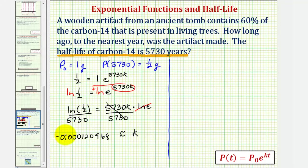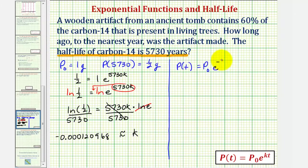This means that for carbon-14, the exponential decay model is p of t equals p sub zero times e raised to the power of negative 0.000120968 times t.